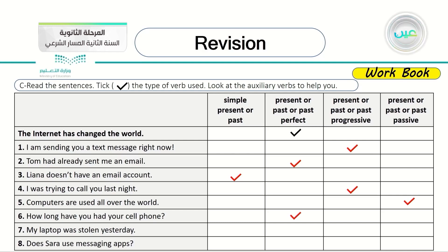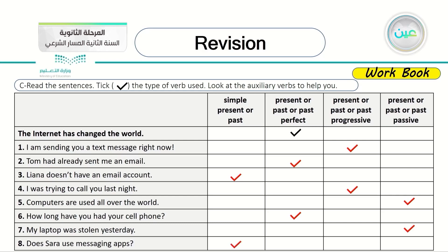Number seven: 'My laptop was stolen yesterday.' 'Was' indicates past tense, and we don't know who stole it — so it's past passive. Number eight: 'Does Sarah use messaging apps?' The last one is of course a simple present.